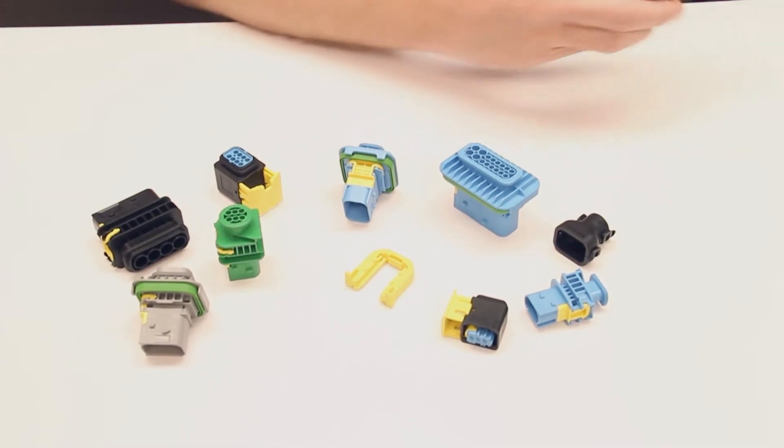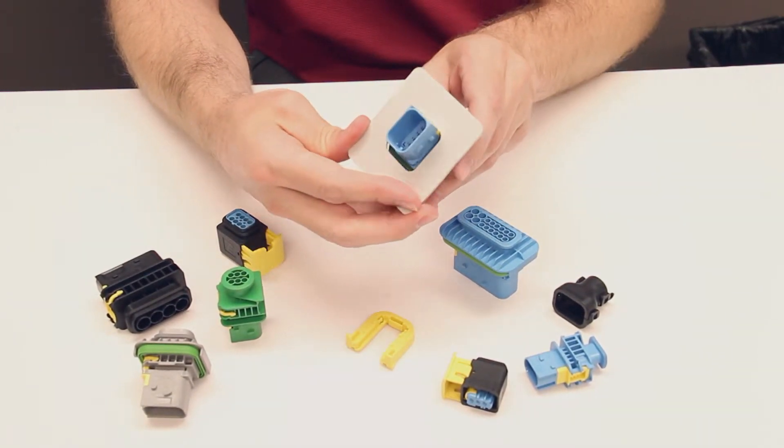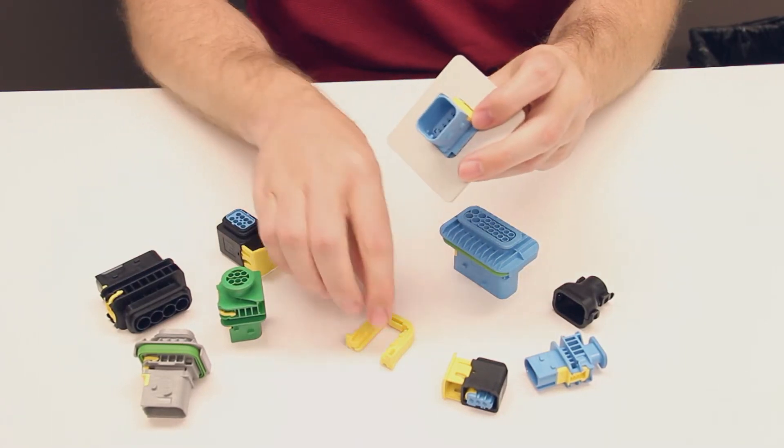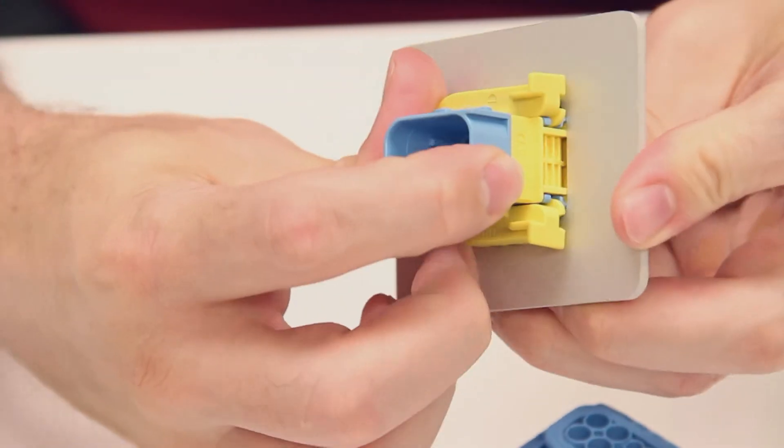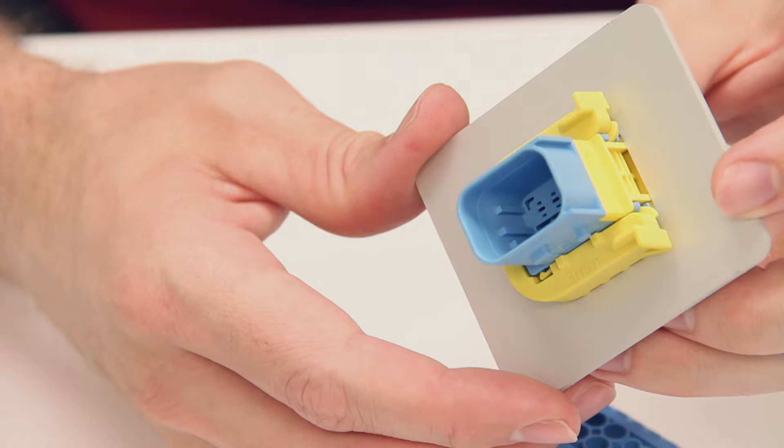After you have cut out the correct size hole in your panel, slide the tab housing through. Next, slide the fixing slide into place. The tab housing is now secure against the panel.